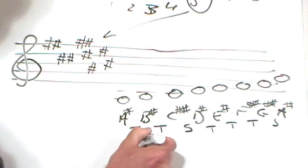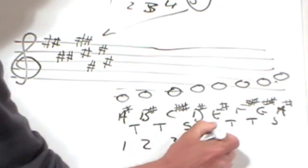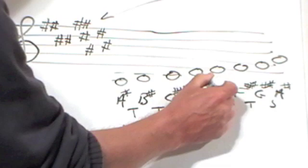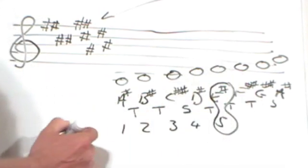Again we take the fifth. One, two, three, four, five. And our next key in the sequence will be E sharp.